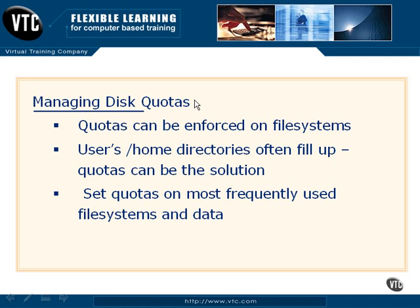So you might set a soft limit at 350 megabytes, a hard limit at 500, and give them a grace period of five days. That means they will have five days to drop below the soft limit before they are penalized. This allows them some level of flexibility and also alerts them that they're going to run out of disk space and need to clean things up, so they're not abruptly met with a denied message.